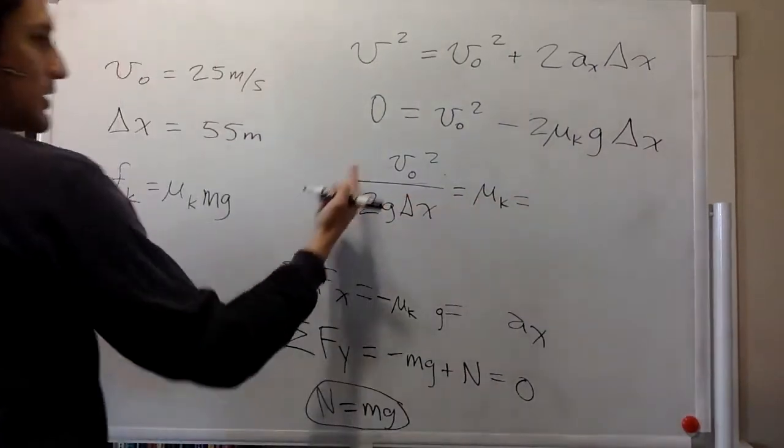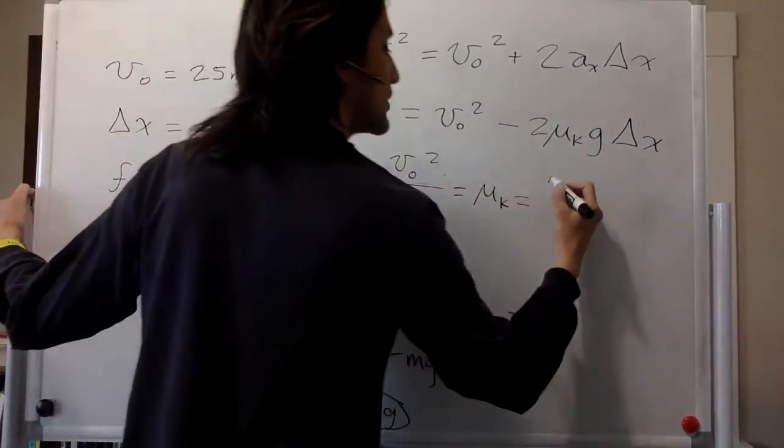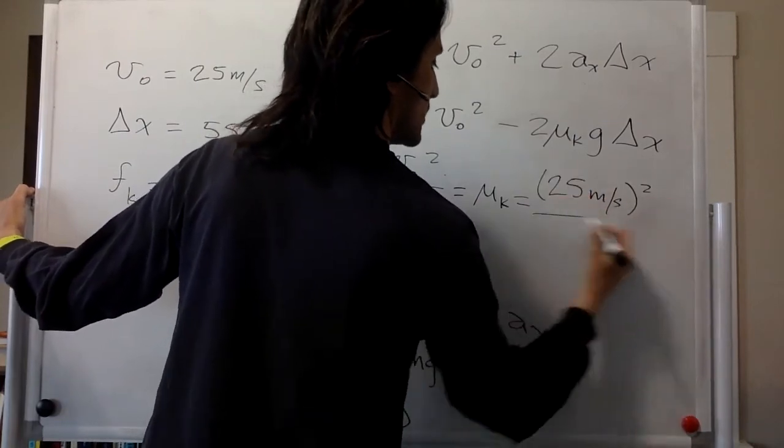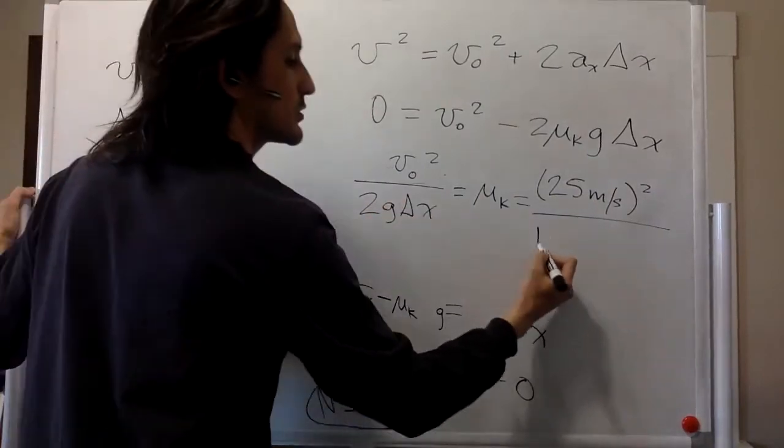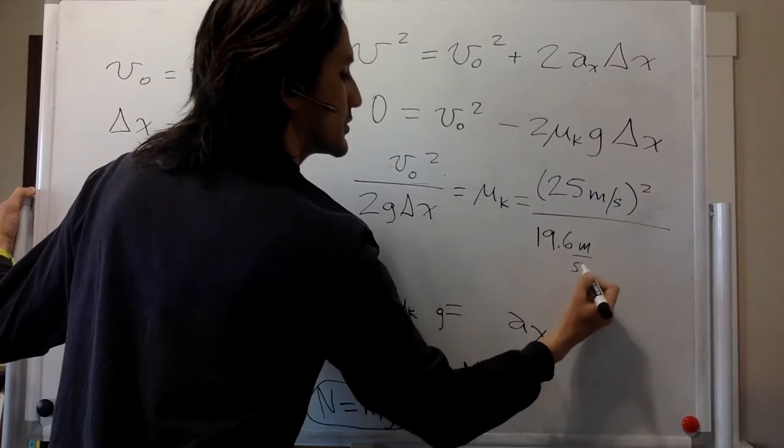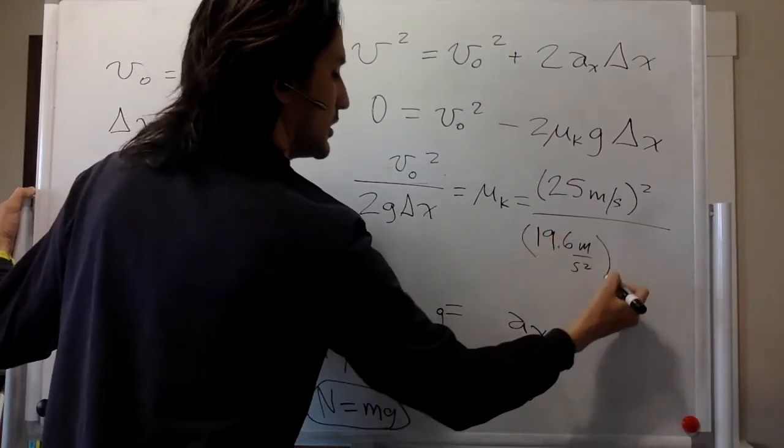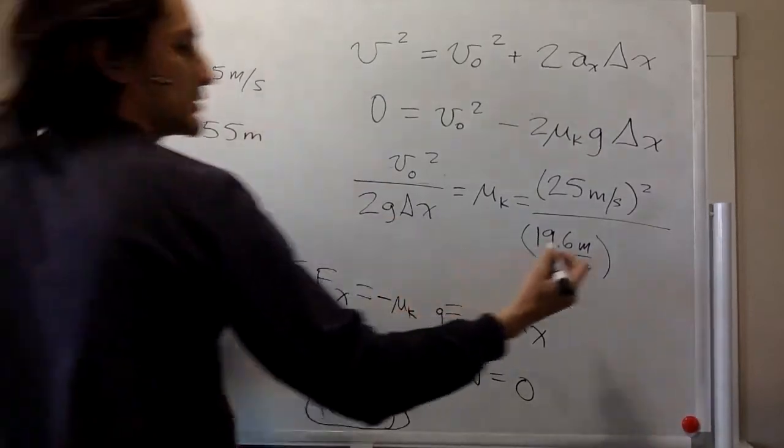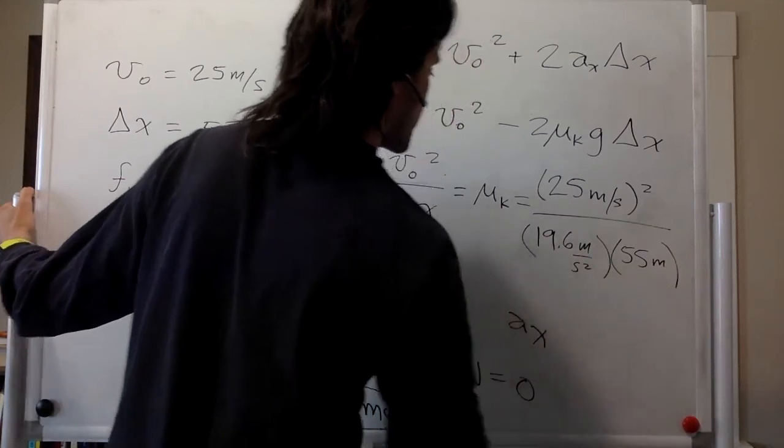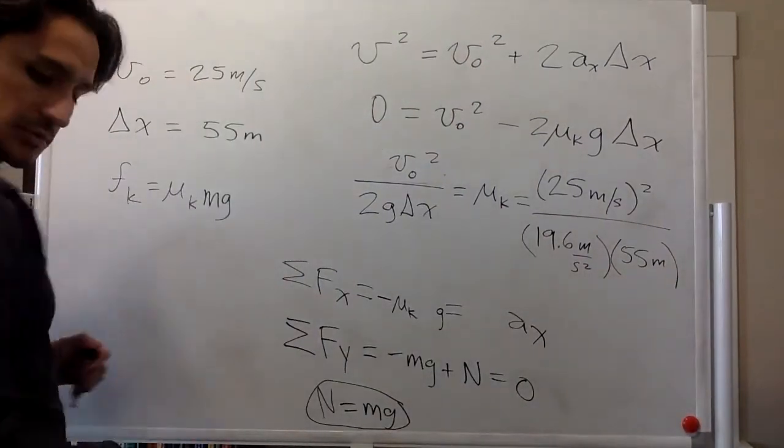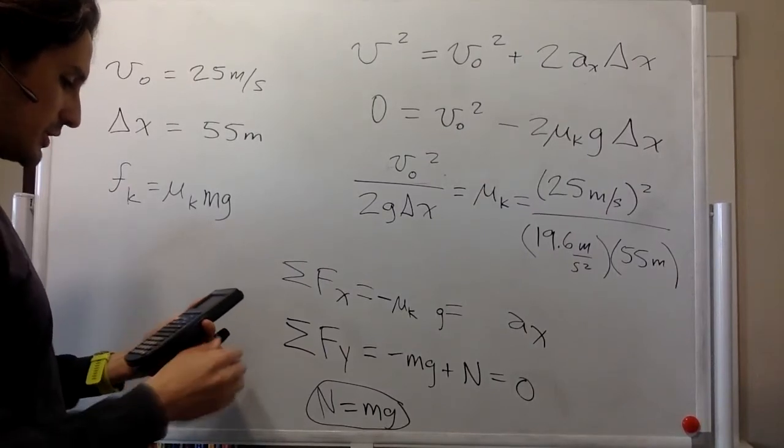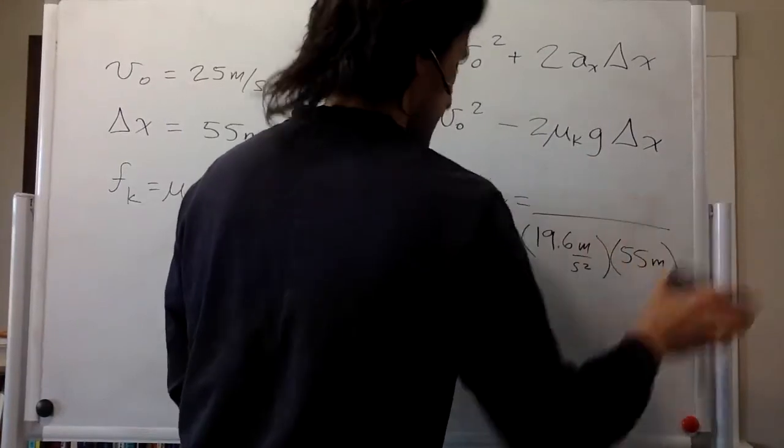Let's plug in some numbers. So this is going to be 25 meters per second squared divided by, this is 19.6, 2 times g, 19.6 meters per second squared. This delta x is 55 meters.